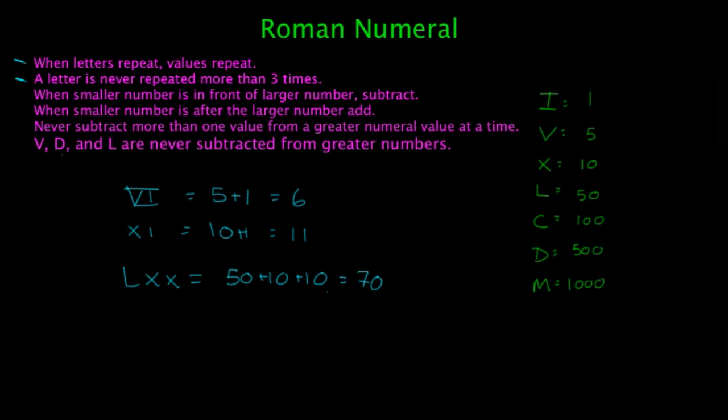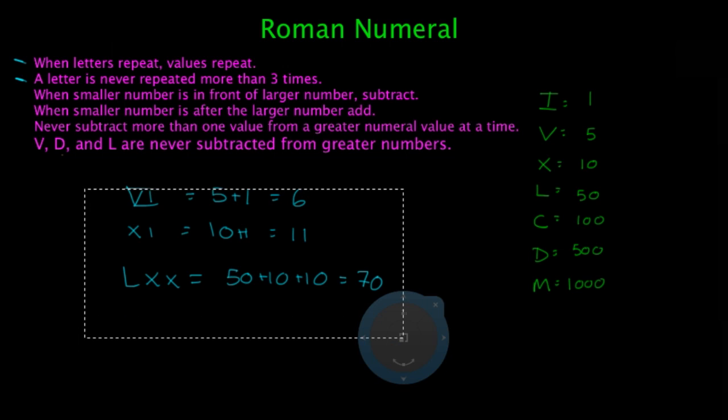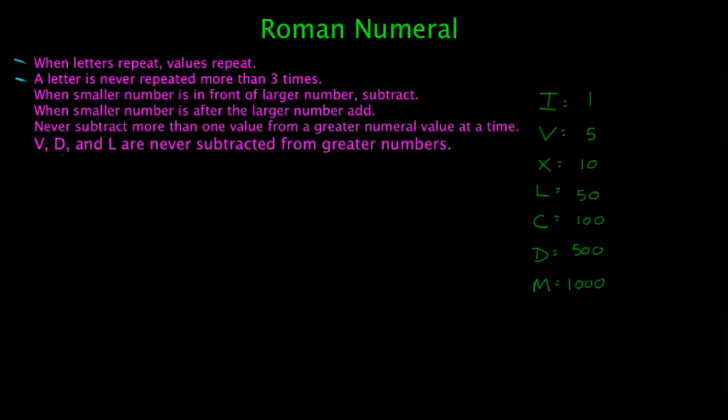So it's always good to remember those. Let's go ahead and go on to the next one. So the next one is never subtract more than one value from a greater numeral value at a time. So you're not going to have I, I, X, and that does not equal 8. You could just go ahead and do V, I, I, I, and that will equal 8. But you cannot subtract more than one value at the same time.